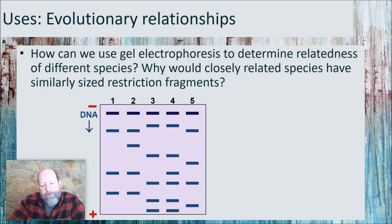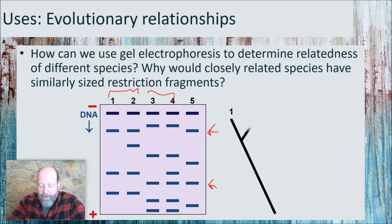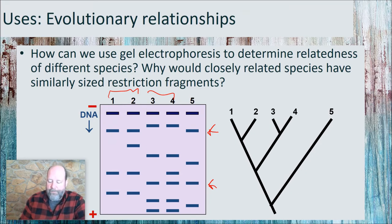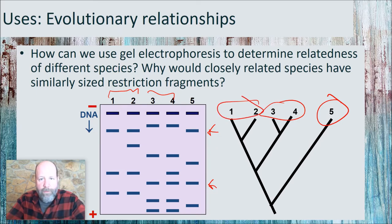We can also look at evolutionary relationships. The DNA fingerprints of more closely related species are going to be more similar than those between more distantly related species. Looking at this, you can make a cladogram. You can see, three and four seem to be pretty closely related and one and two also seem to be closely related. There's only one difference between one and two and only one difference between three and four. Organism five here has some similarities with the others, but it is definitely the outgroup. So we'd make a cladogram and it would look like this, with five being that one that's most different, three and four being most closely related to each other, and one and two being most closely related to each other. So we can use electrophoresis to generate cladograms. It's another avenue of evidence that we kind of talked about before.